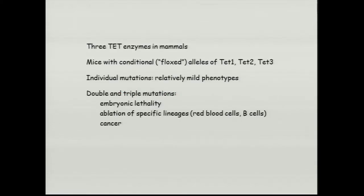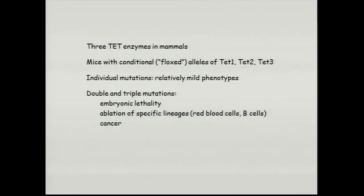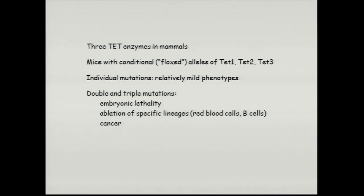What we were trying to do was understand the functions of TET enzymes in mammals, and I'll try to relate it to what we know about DNA methylation changes. There are three TET enzymes, and we've made mice with conditional floxed alleles of all of them. The individual mutations give relatively mild phenotypes depending on whether you're looking at embryonic development or particular tissues. Double and triple mutations actually give fairly striking phenotypes, such as embryonic lethality and ablation of specific lineages.